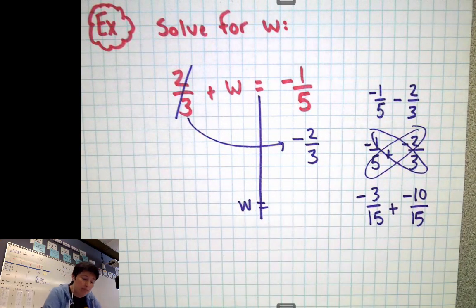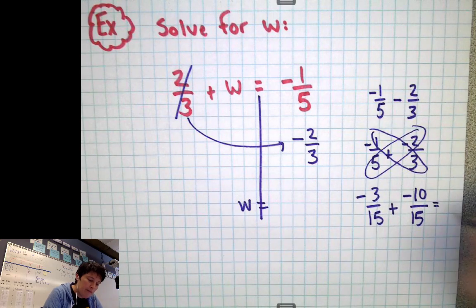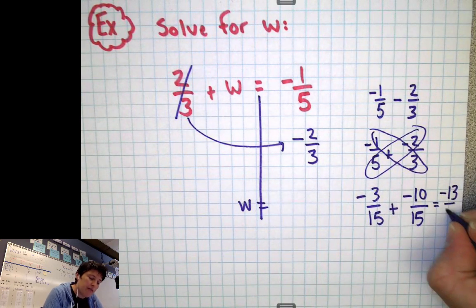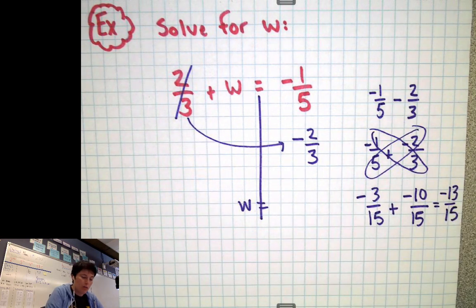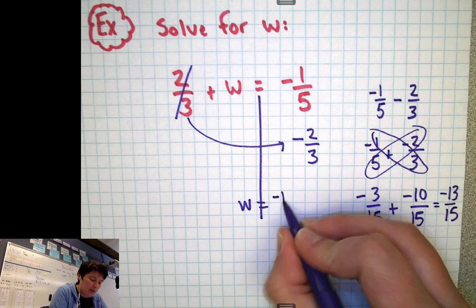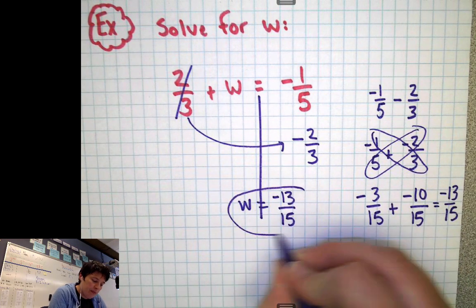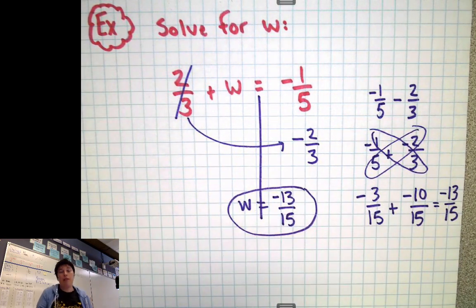So a negative 3/15ths plus a negative 10/15ths. Same signs. Add and keep. So I'm going to see an answer of negative 3 and negative 10 makes negative 13/15ths. So what is w equal to? Negative 13/15ths. And there's our solution.